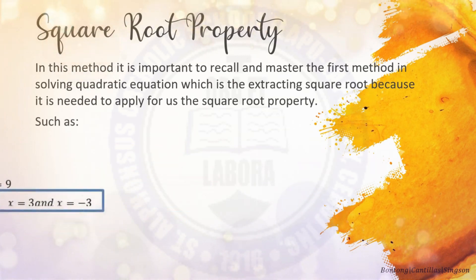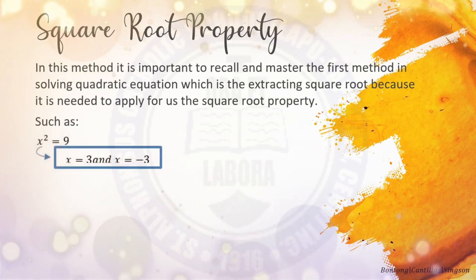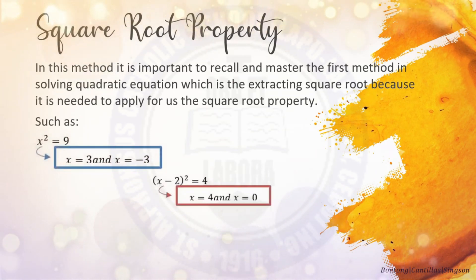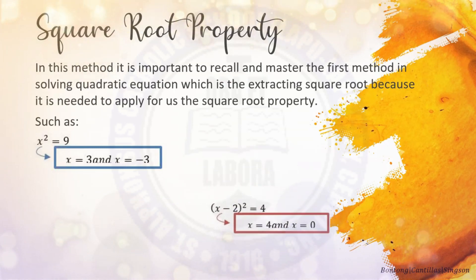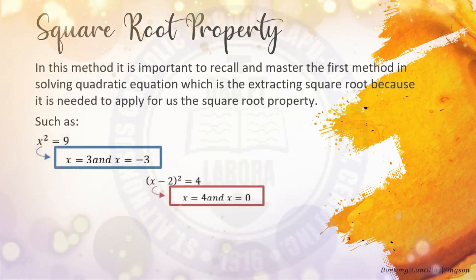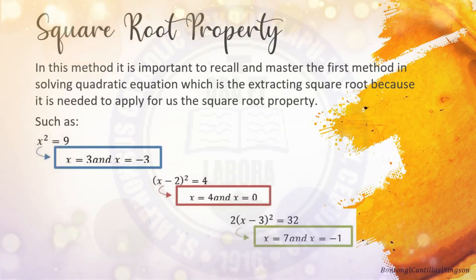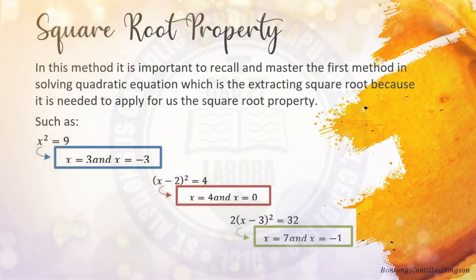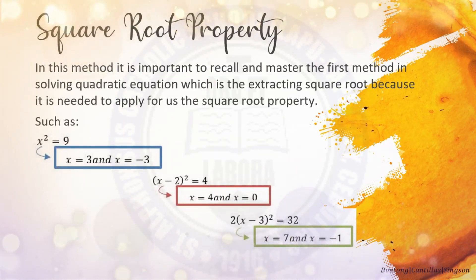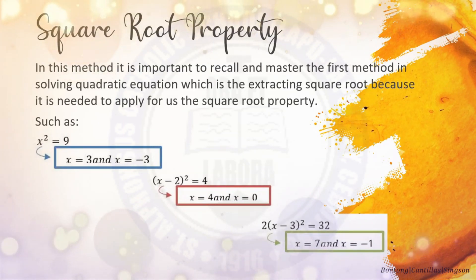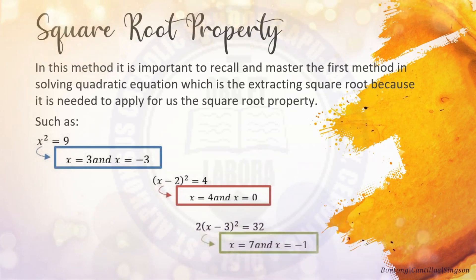For example, x squared equals 9 — the roots are 3 and negative 3. Quantity x minus 2 squared equals 4 — the roots are 4 and 0. And 2 times quantity x minus 3 squared equals 32 — the roots are 7 and negative 1.